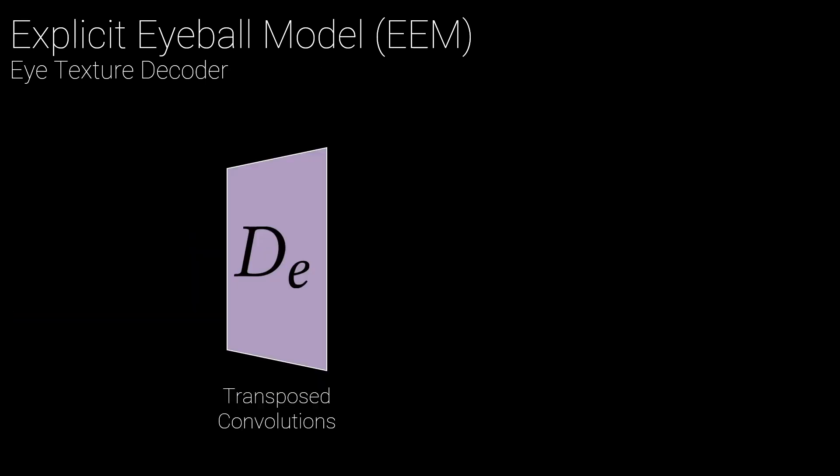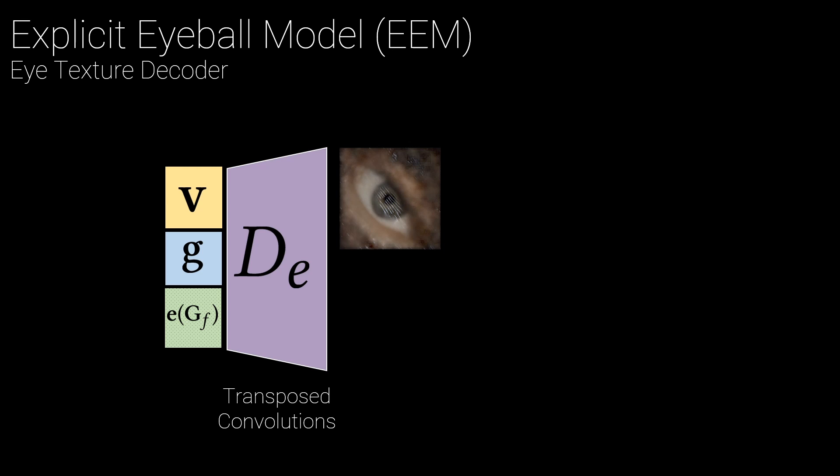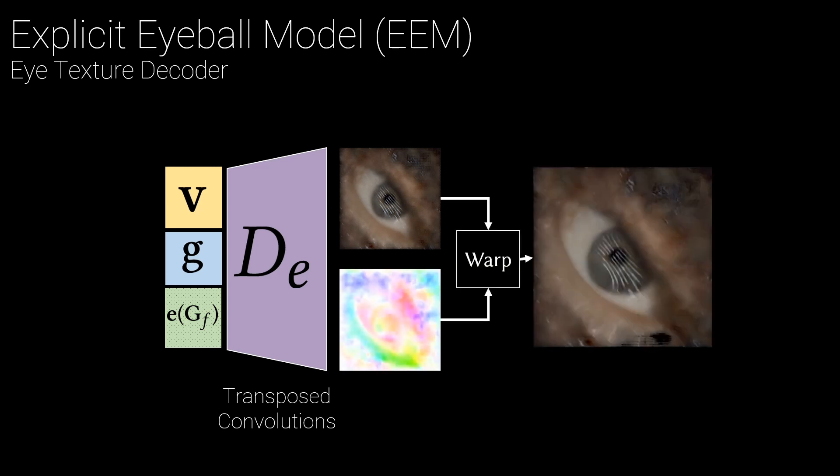To render our new eyeball geometry, we decode a per eyeball texture using only interpretable signals, again with the goal of achieving better generalization. We produce eye textures using viewpoint, eyeball orientation, and eyelid shape so that we can model shading and specular effects. To help the model produce these specular effects, we formulate the final texture as a dynamic template and a warp field that warps that template into the final texture.